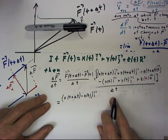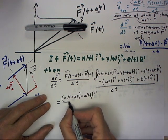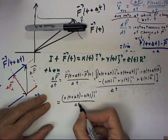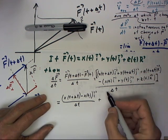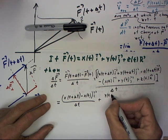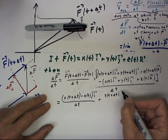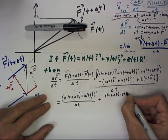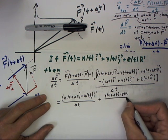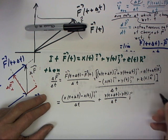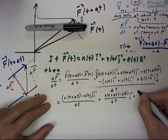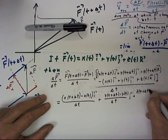And I'm also going to distribute my division by delta t. So I'm going to have this over delta t. And then on the j component, we're going to have y of t plus delta t minus y of t divided by delta t, and that is times our j vector. And then we're going to have a very similar term for the z.